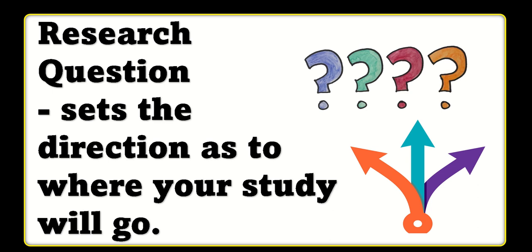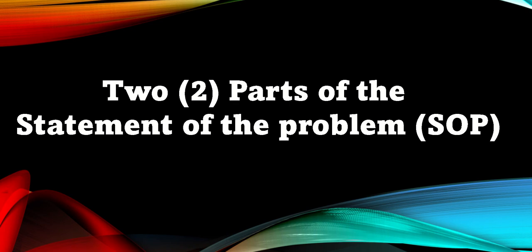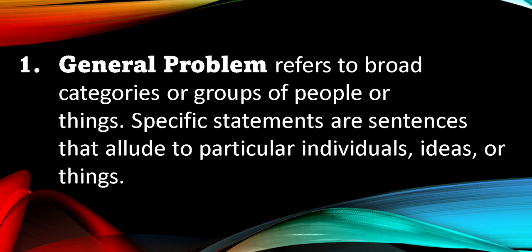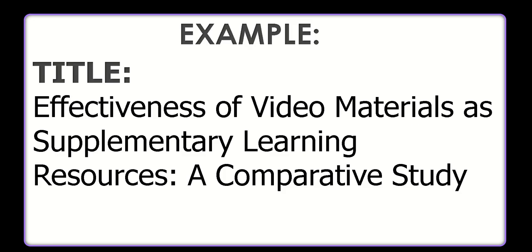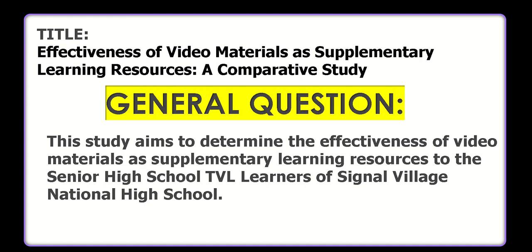The research question sets the direction of where your study will go — what your recommendations and final output will be. Now let's discuss the two parts of the SOP, or Statement of the Problem. The first is the general problem, which refers to broad categories or groups of people or things. For example, the title: 'Effectiveness of Video Materials as Supplementary Learning Resources: A Comparative Study.'